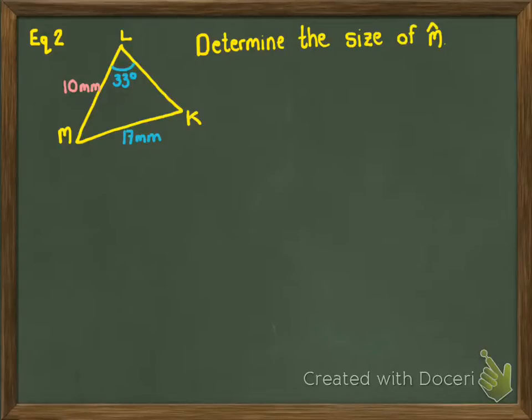Now, in this case, I've decided to make it a bit more difficult. I've decided to ask you for angle M. Now, angle M isn't opposite LK. However, 10 is opposite angle K. So, if I can find angle K, I can do sum of angles in a triangle to find angle M.